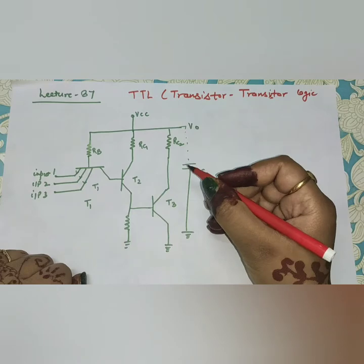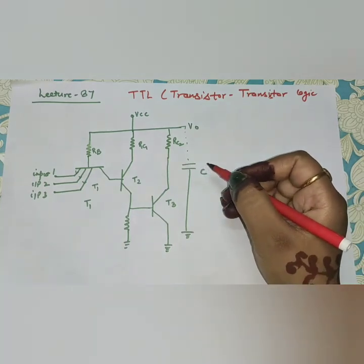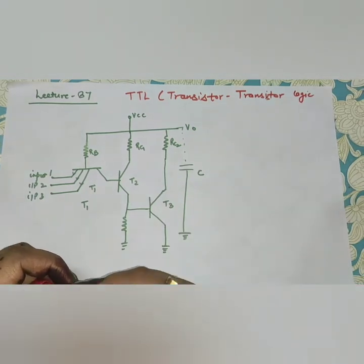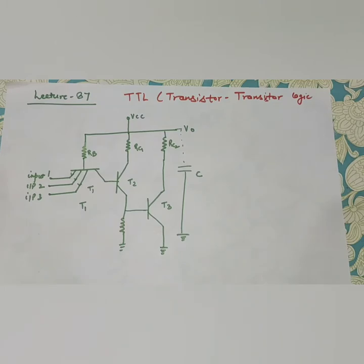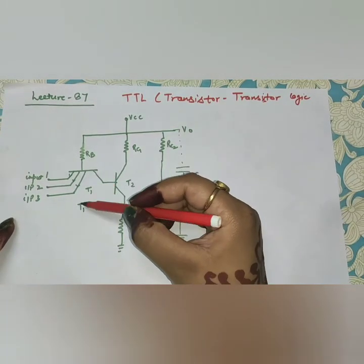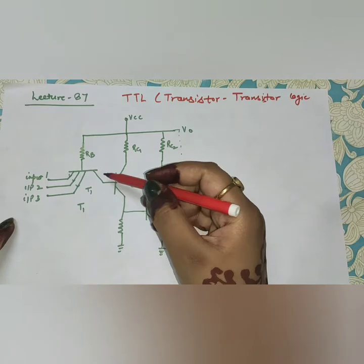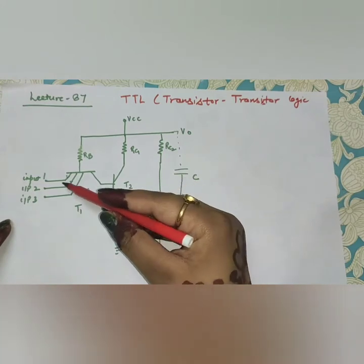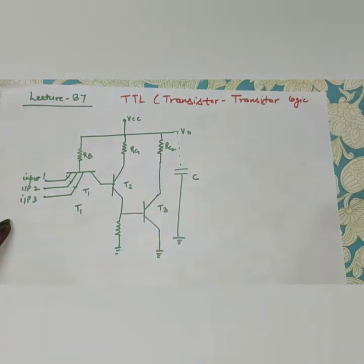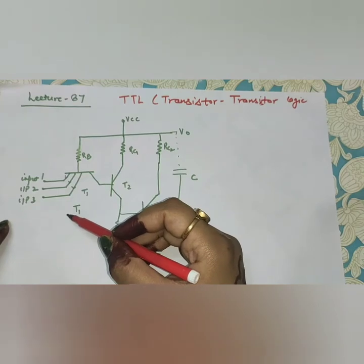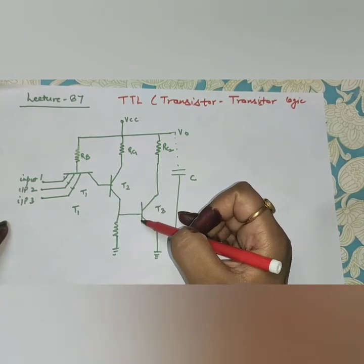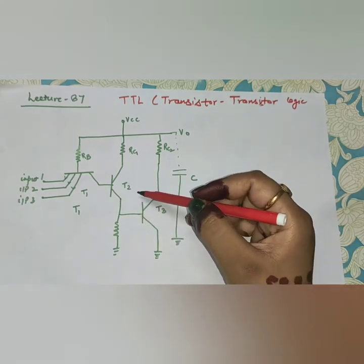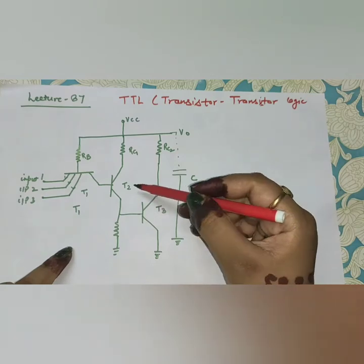In the previous lecture I talked about RTL and DTL. Some problems in those can be overcome by TTL. So in TTL, the diode that was there is replaced by a transistor, and this transistor has many inputs. The D1 and D2 diodes which were connected to the transistor were replaced by T2 and T3 here.